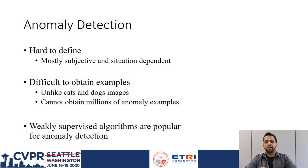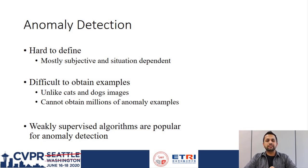An event might be anomalous at a certain location, whereas it might be completely normal at other locations. For example, a fire in a stove may be completely normal. However, it is completely anomalous if it is in a bedroom or in a bus.